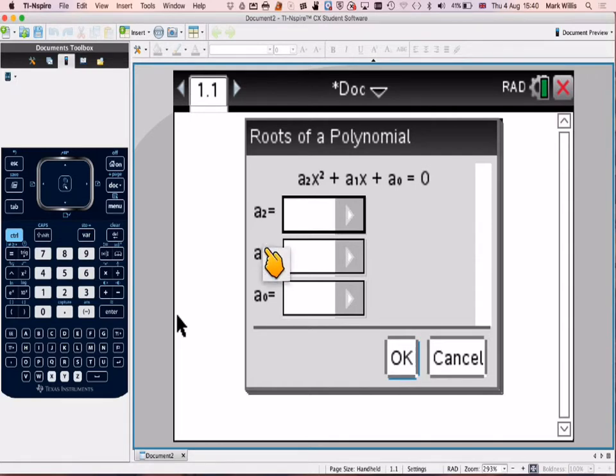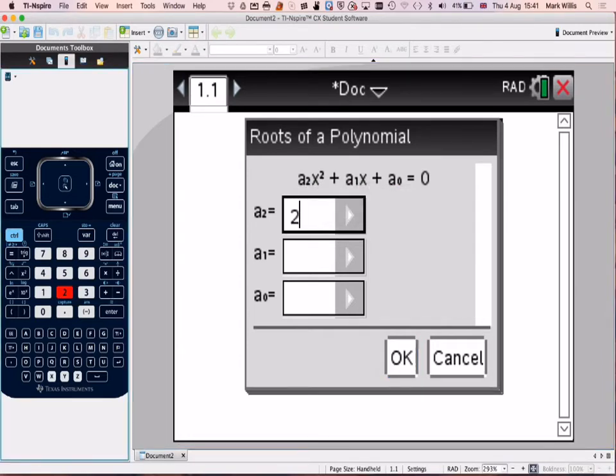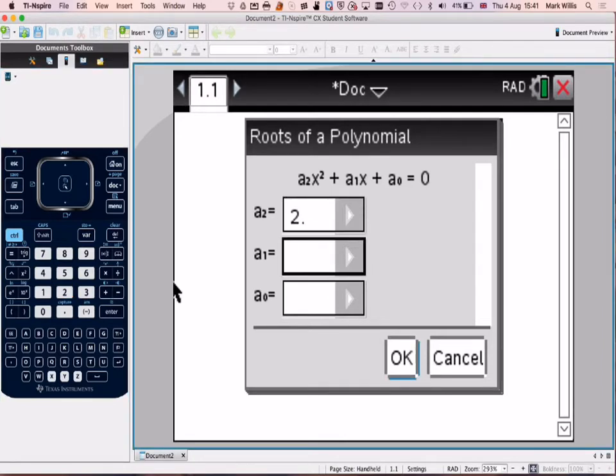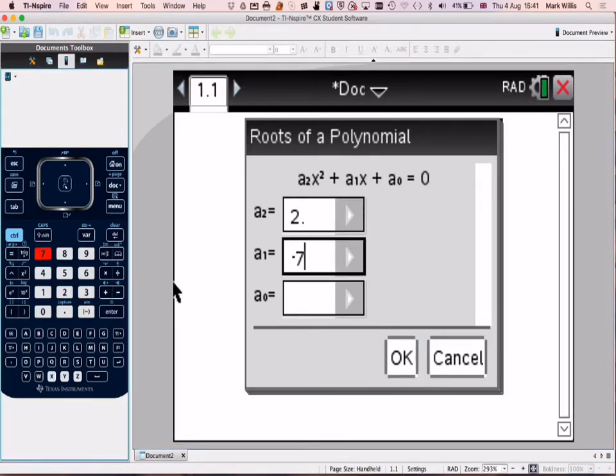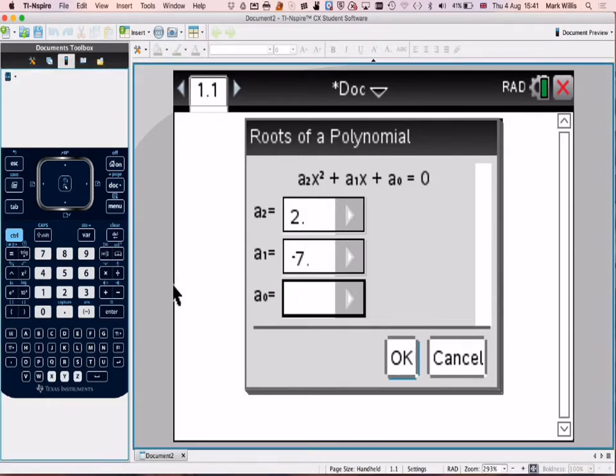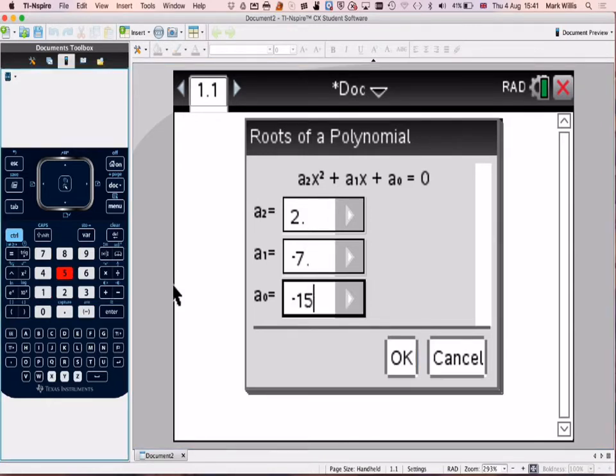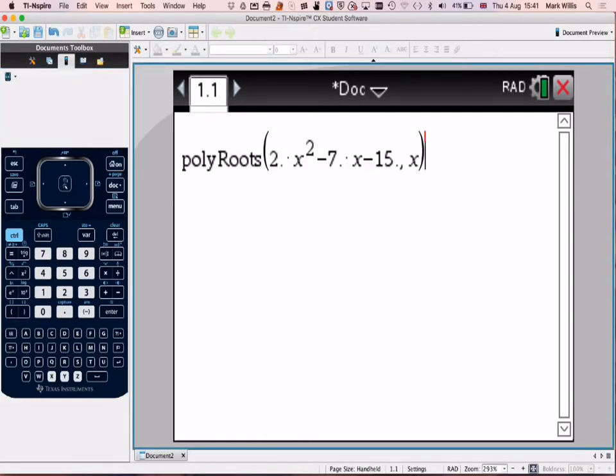So it was 2x squared, so we need to put in the number A, which was 2. They unfortunately use A2, A1, A0, but you need to think of this as Ax squared plus Bx plus C. So in here we need to put in a 2. The next one was minus 7, so minus 7, that would be B on our model, and then A0 is minus 15, minus 15, like that. Then all we need to do is press OK. Just check it carefully.